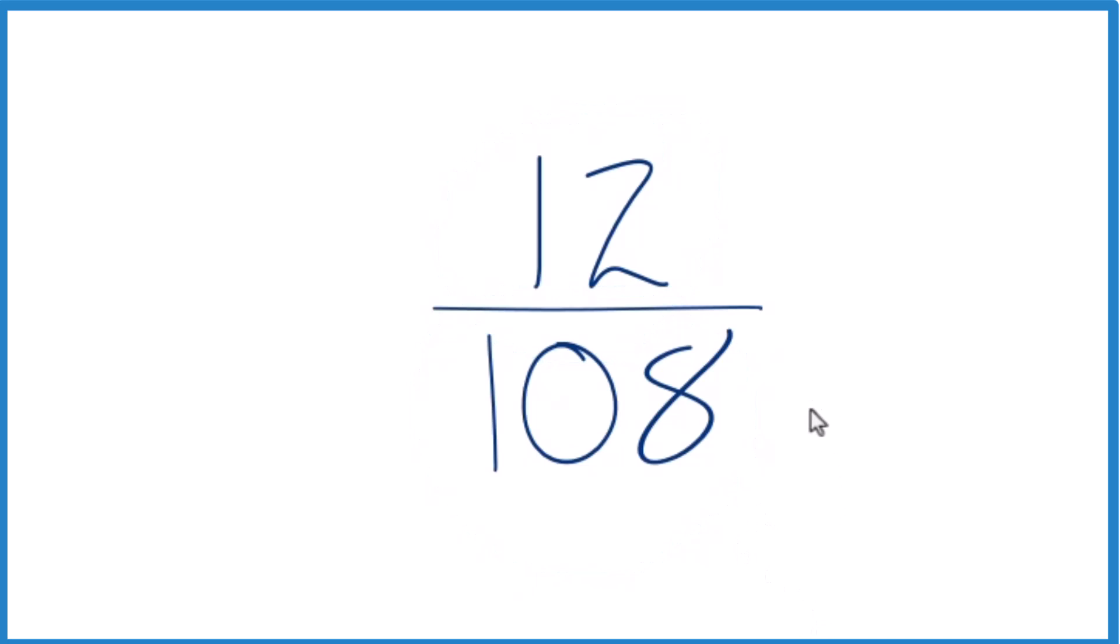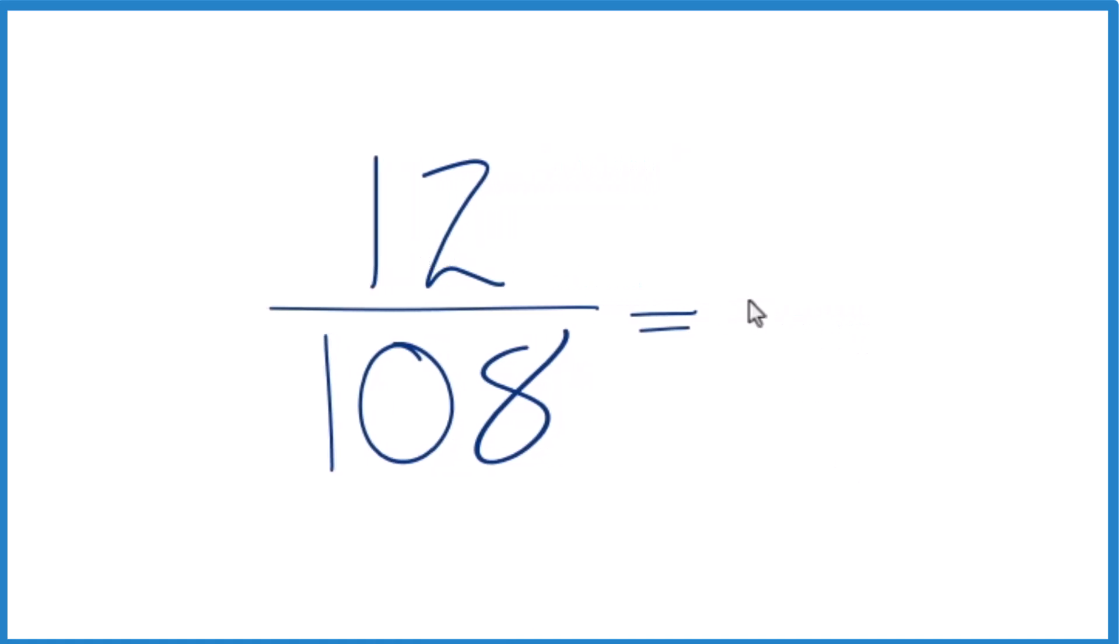Probably the easiest thing to do here, since these are both even numbers, let's divide both the numerator and the denominator by 2. 12 divided by 2 is 6. 108 divided by 2 is 54.